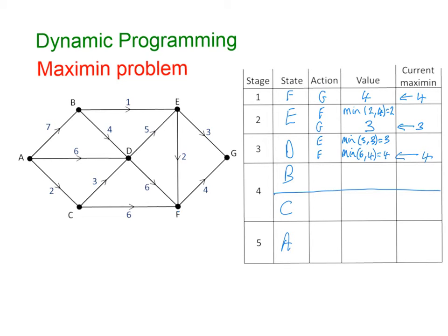Moving on to B — two routes: B to D, and B to E. B to D has a weight of 4; from D the current maximum is 4, so the minimum of 4 and 4 is 4. B to E has a weight of 1; from E the current maximum is 3, giving a minimum of 1 — clearly not a good route. So my current maxi-min from B is 4, via D.